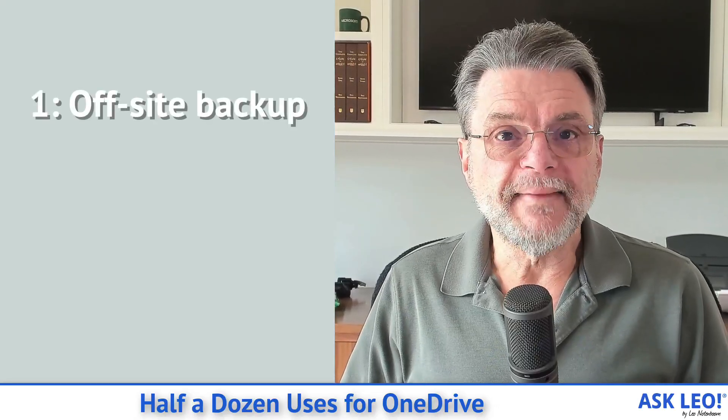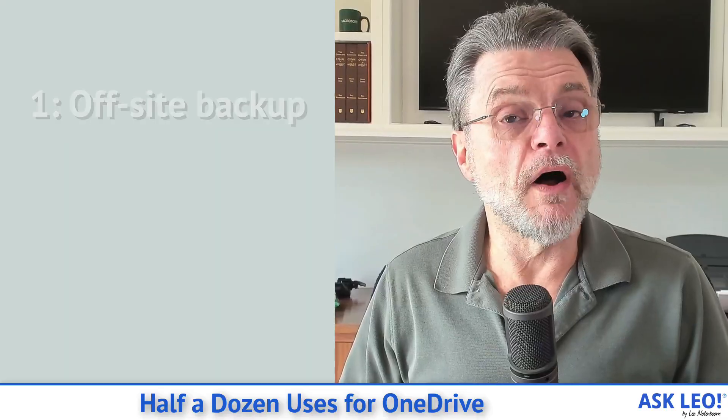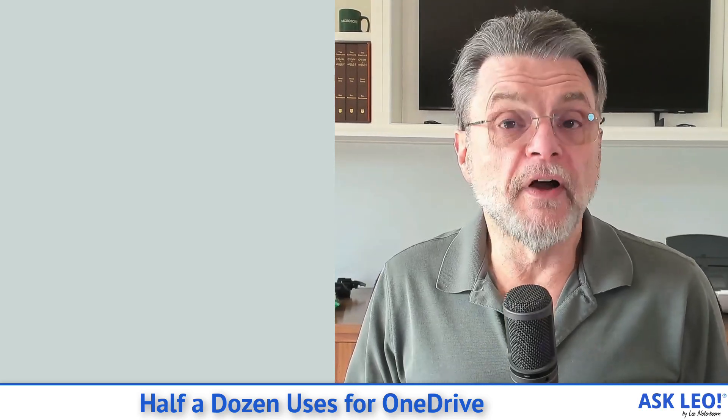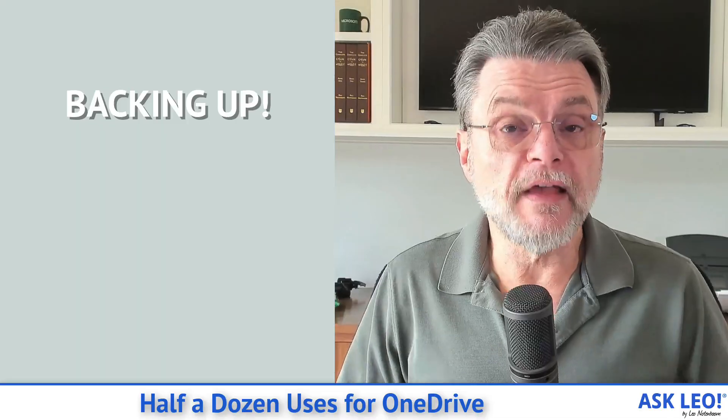Number one: offsite backup. If you do nothing else, it's a great way to automatically have your files saved somewhere safe that isn't the same place where your computer is. We often talk about backing up and making sure that you've got backups of everything, but most of the time those backups are in the same place or at least nearby wherever the work is taking place. For example, my backups are here in my house. Offsite backup is one additional layer of protection should something really bad happen. If my house were to burn to the ground, all of my backups would probably go with it. However, anything I've got stored in OneDrive automatically got backed up to the cloud — it's still there. I can access those files from somewhere else when I get my replacement machines, when I recover from whatever disaster happened.